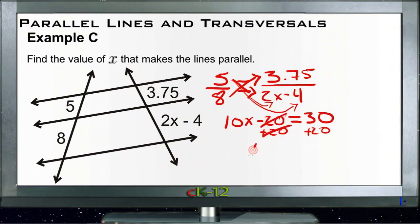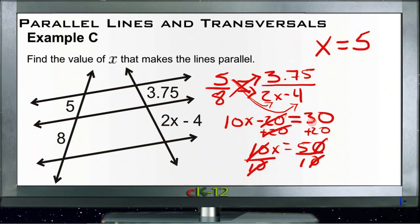Oh, now we're talking. Divide both sides by 10, 5 over 1. So x must be 5 in order to make those parallel.